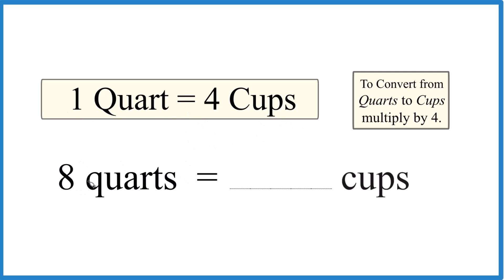So if we have eight quarts, if one quart is four cups, eight quarts is just eight times four. Thirty-two cups, and that's our answer.